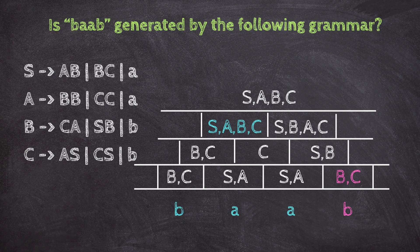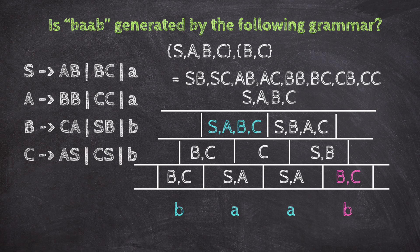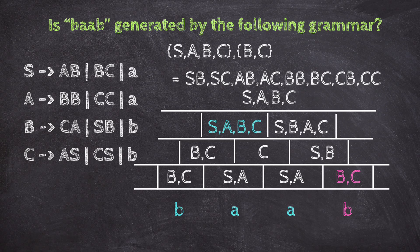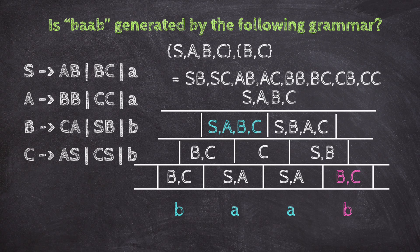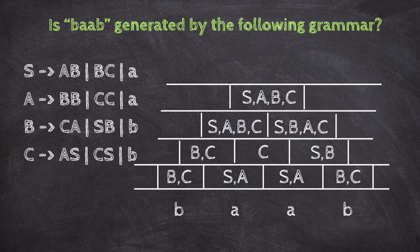Next, split as BAA and B. S, A, B, C from BAA, and B, C from B. Combinations: SB, SC, AB, AC, BB, BC, CB, CC. B goes to SB, S goes to AB, A goes to BB, S goes to BC, C goes to CS, A goes to CC. That covers B, S, A, and C. So after this, top cell has S, A, B, C.